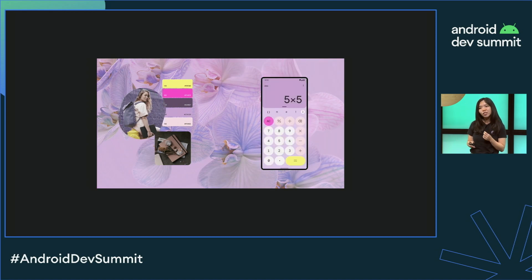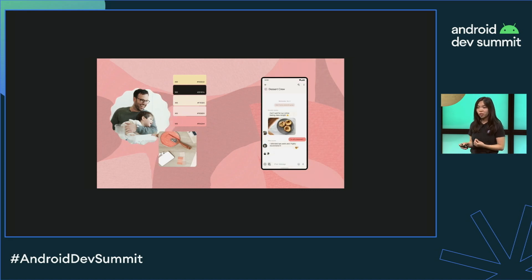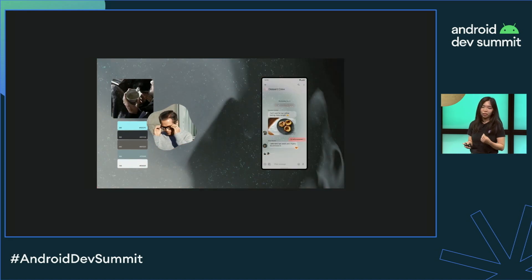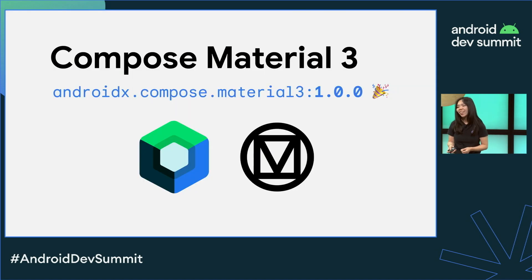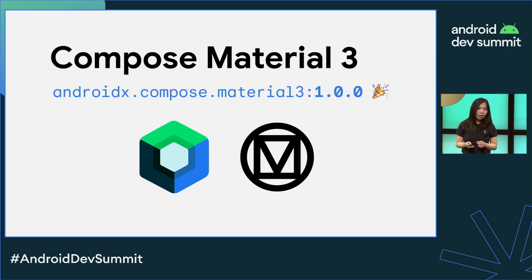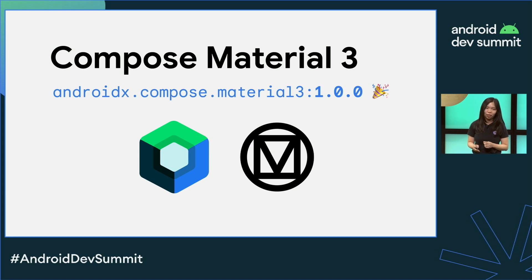Material 3 is the first step towards making apps not only functional, but also comfortable, whether you're colorblind, need a screen reader, or currently obsessed with pink. The Compose Material 3 Jetpack library is an implementation of Material U based on the Material 3 design system. The first release has just been launched, so now it's a great time to start using it in your apps.